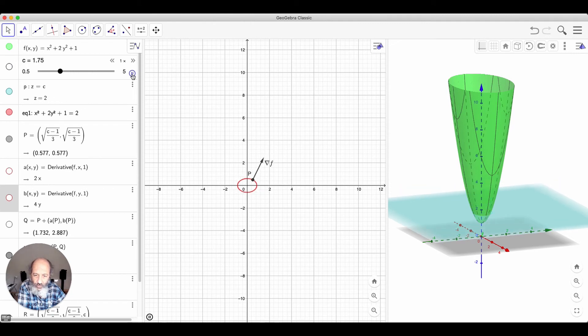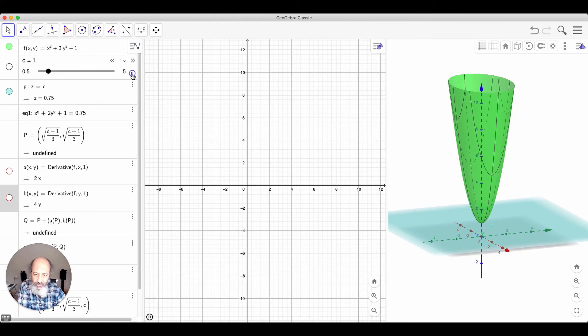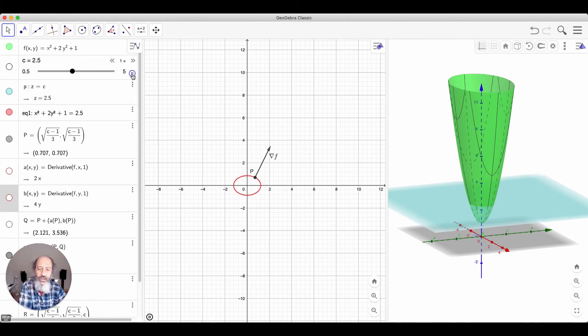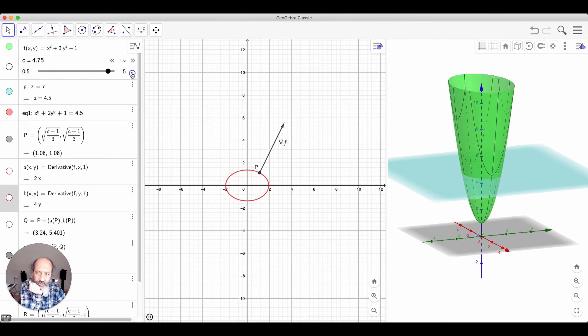See, the gradient is always pointed away from the origin because the origin is where the function is going decreasing. And function increases away from the origin. And as you can see here, the gradient becomes bigger and bigger and bigger in length as we move away.